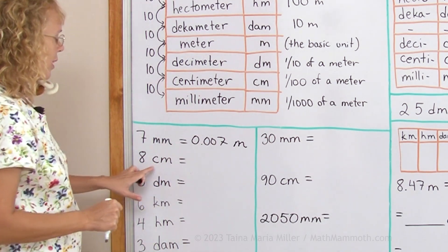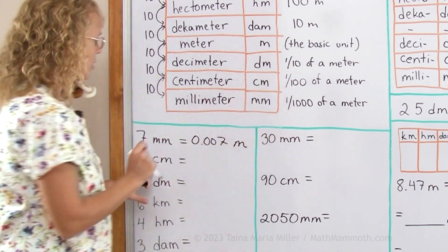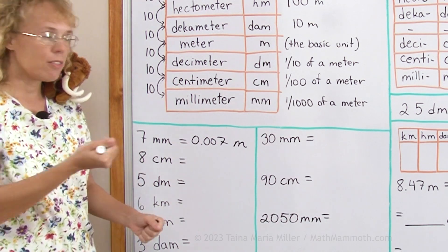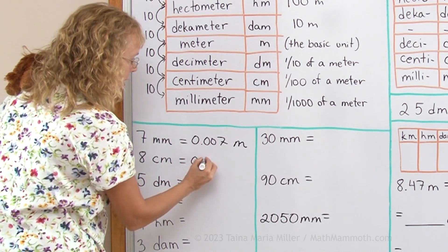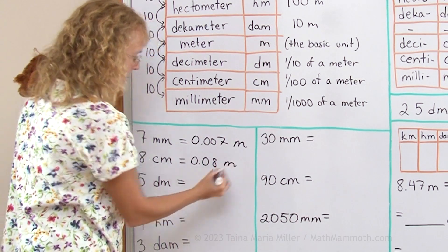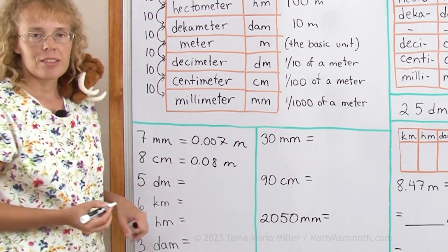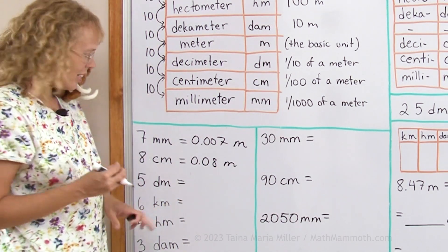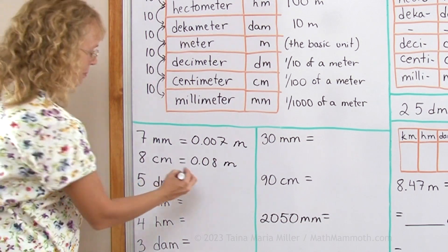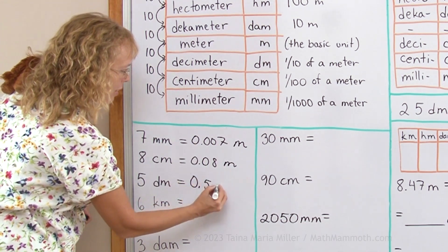Eight centimeters. Centi means one-hundredth, so here we have eight-hundredths of a meter, 0.08 meters. Five decimeters. Deci means one-tenth, so here we have five-tenths, 0.5 meters.